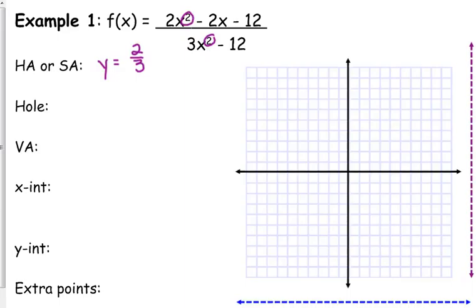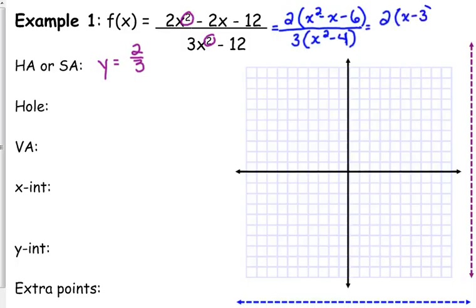Next, we need to factor, because we need to find holes and vertical asymptotes. So the numerator has a GCF of two, I'm going to take that out, we're left with x squared minus x minus six. The denominator has a GCF of three, which leaves us with x squared minus four. Both numerator and denominator will factor further. The numerator is two times x minus three times x plus two. The denominator is the difference of perfect squares, so that is x plus two times x minus two.